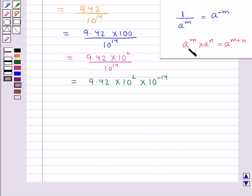We also know that a to the power m when multiplied by a to the power n gives us a to the power m plus n. So this is equal to 9.42 multiplied by 10 to the power 2 minus 14.